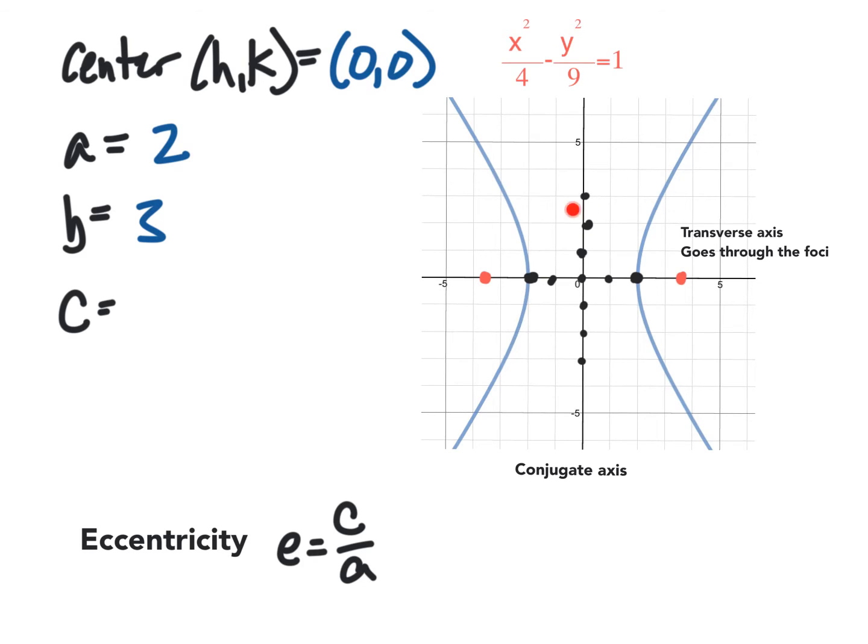Now, you might be thinking, well, there's nothing here. But what you do is you draw a box around these things. Now, once you have this box, you're going to go through the diagonals of the box and through the center. And what this does is it shows you the asymptotes of the hyperbola. As you can see, this hyperbola cannot touch these asymptotes.